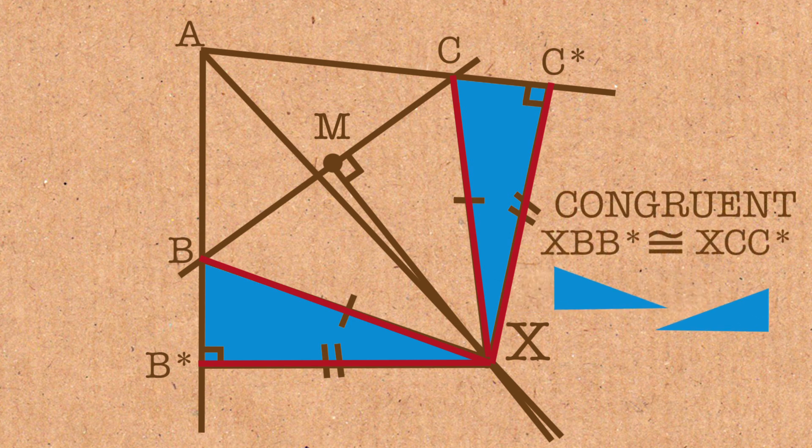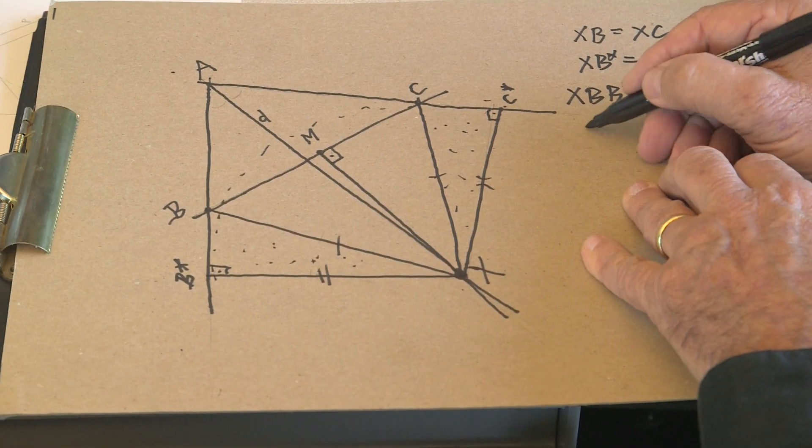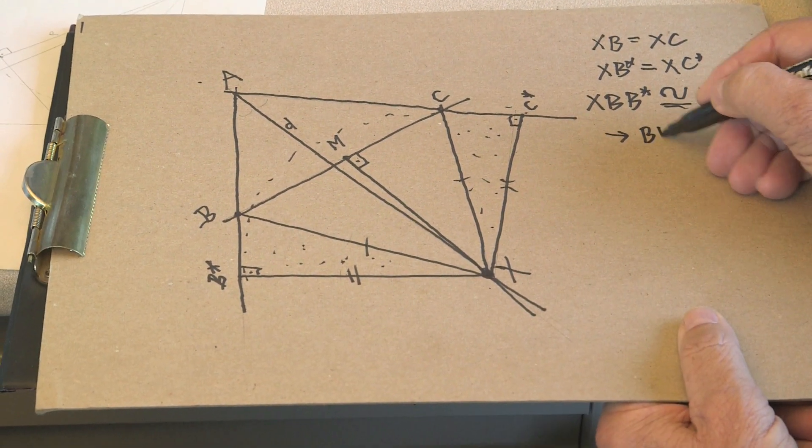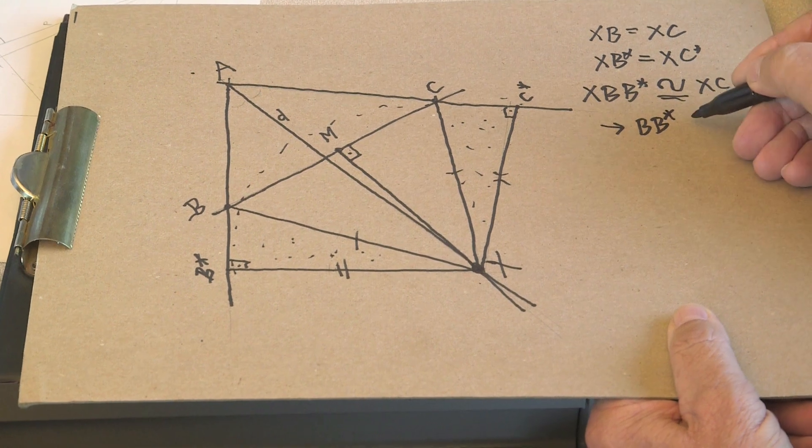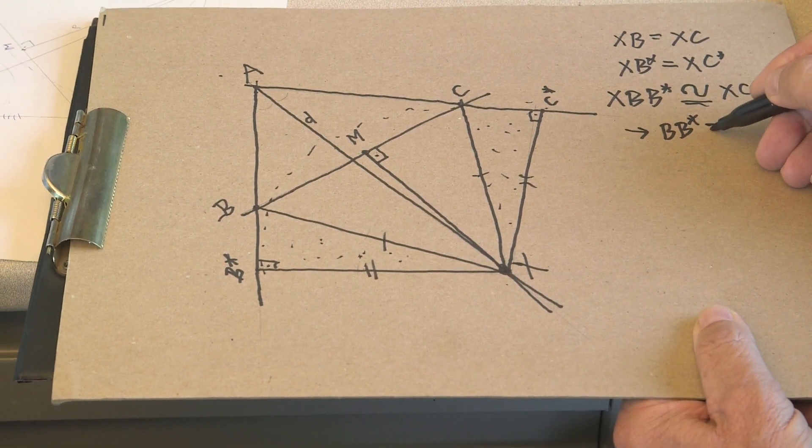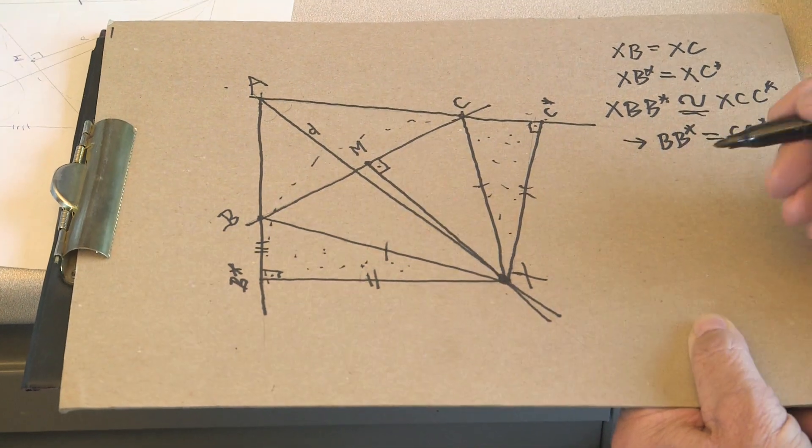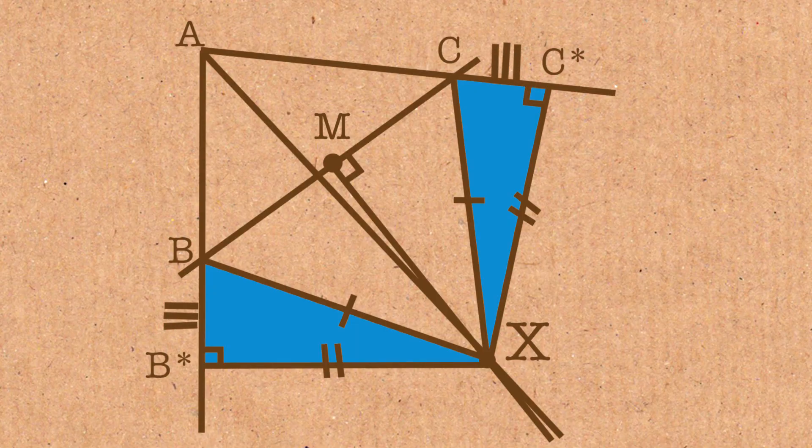As a matter of fact, in this case, you can see they're basically mirror images of one another. Now, this of course tells us that we also now know that BB star must be equal to CC star. BB star, mark it with three slashes, equal to CC star.